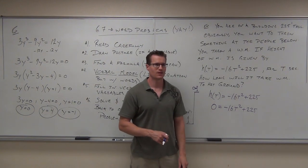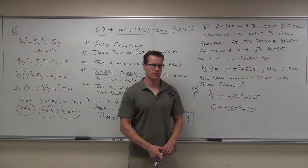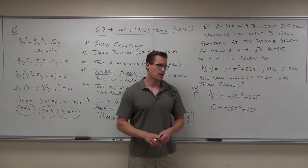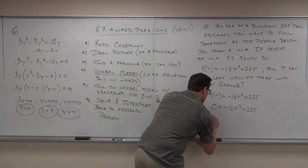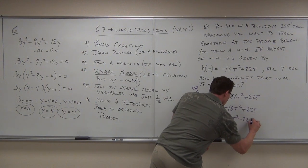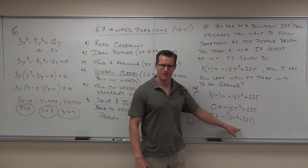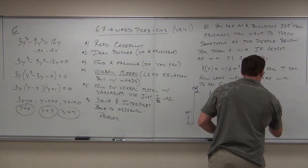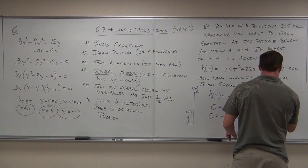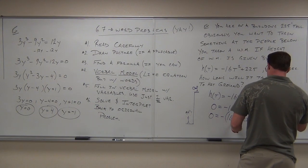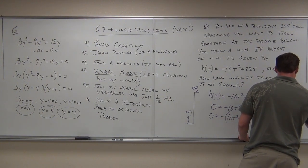Can you solve this? Yes — this is everything we've just done. Set h equal to zero. Is everything on one side? Yes. Is it a quadratic? Yes. Is the first term positive? No — factor out the negative. So we get zero equals negative one times (16t squared minus 225). That's a difference of squares! We can factor to get zero equals negative one times (4t minus 15)(4t plus 15). Verify: 4t times 4t gives 16t squared, and 15 times 15 is 225.